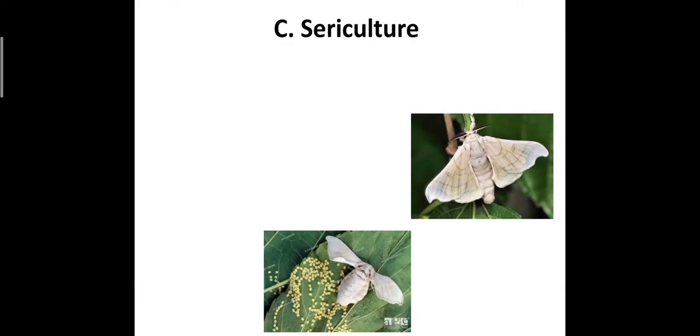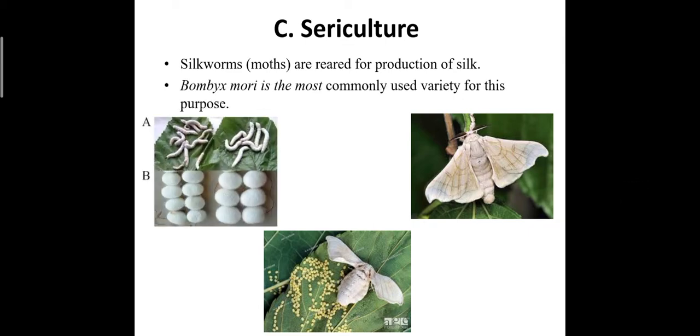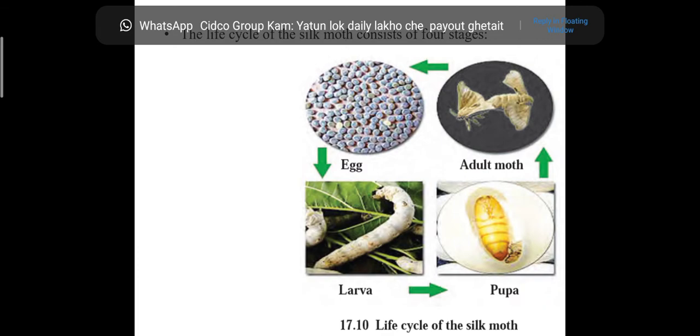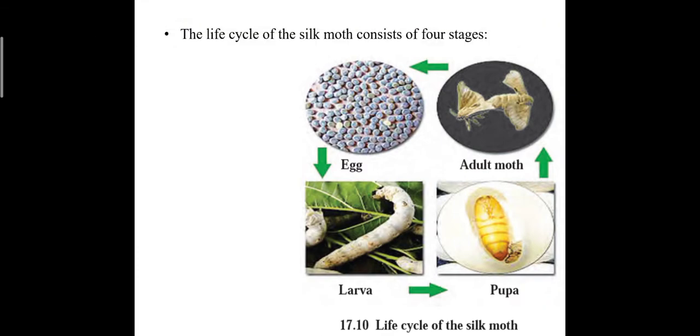The next topic is sericulture. The silkworm — that is, moths — are reared for production of silk. Bombyx mori is one of the most commonly used varieties for this purpose. The life cycle of the silk moth starts from egg, then larva, then pupa, then adult, and after the adult stage they give rise to the next generation.